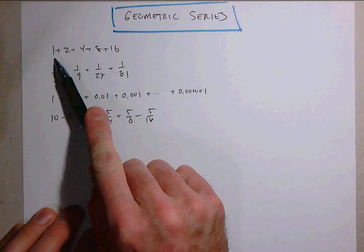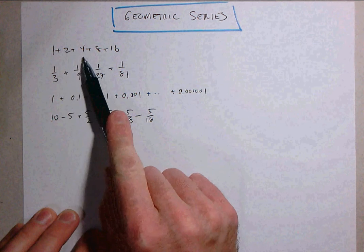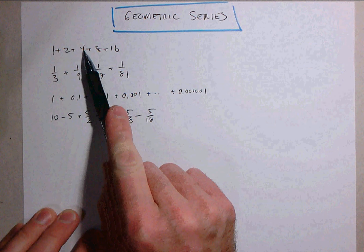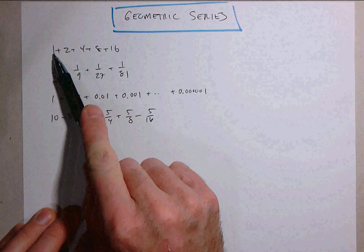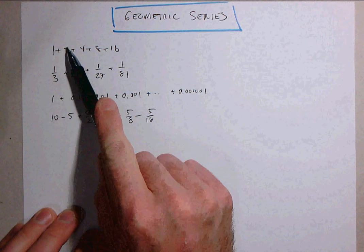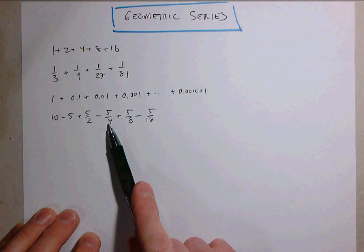Recall that a geometric sequence is one in which from term to term you multiply by a common ratio. So here we multiply by 2 to get from 1 to 2, from 2 to 4, 4 to 8, 8 to 16.